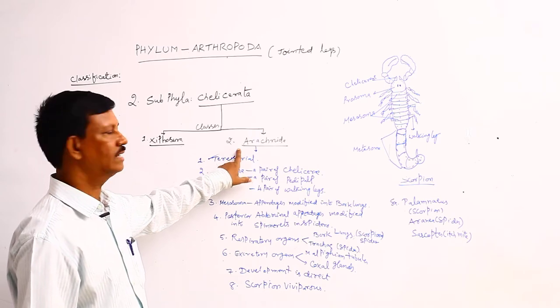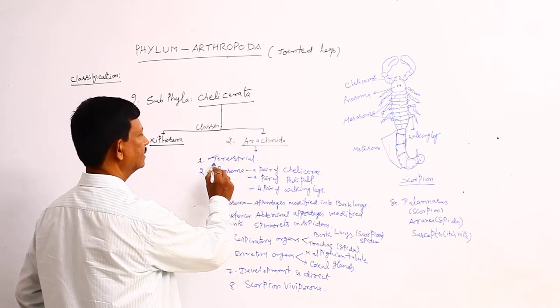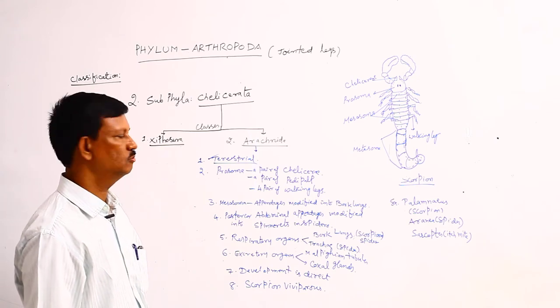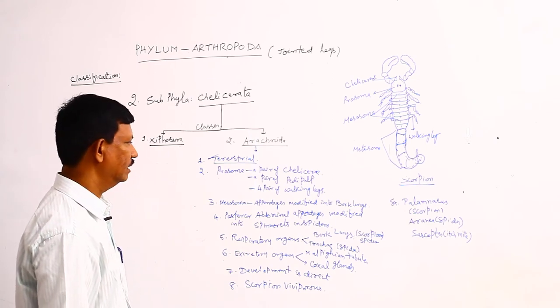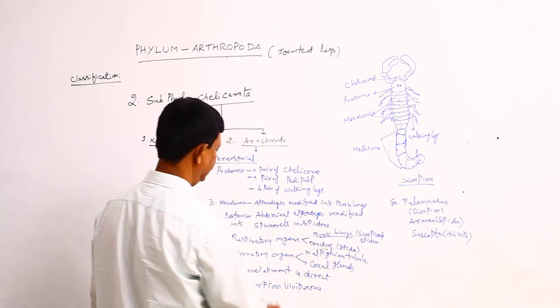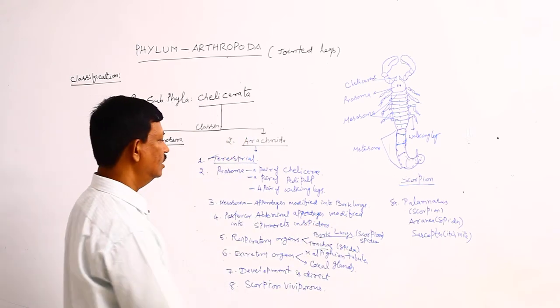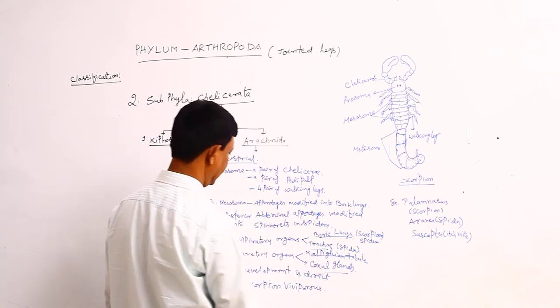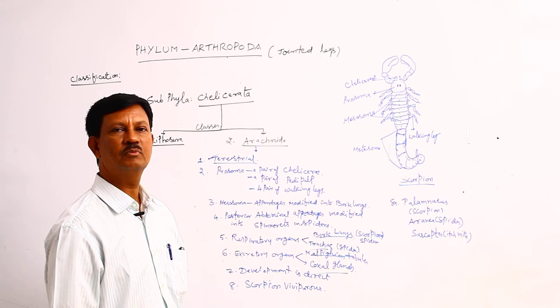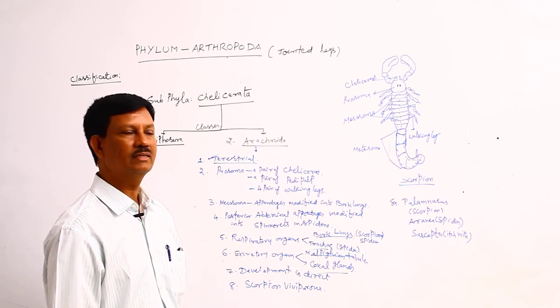Once again, we have to discuss some characters. One is terrestrial animals. Body is divided into prosoma, mesosoma, and metasoma. Respiratory organs are the book lungs or trachea. Excretory organs are the Malpighian tubules or coxal glands. Development is direct, there is no larval forms. Some scorpions produce young ones, they are known as viviparous.